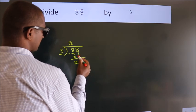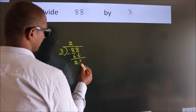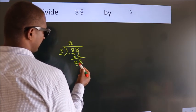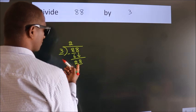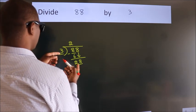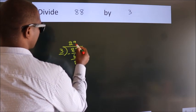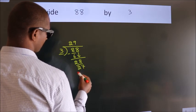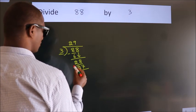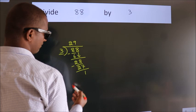bring down the beside number. 8 down. So, 28. A number close to 28 in the 3 table is 3 times 9 which is 27. We should subtract. We get 1.